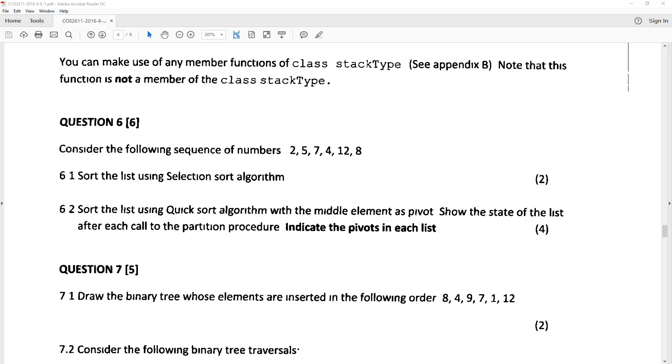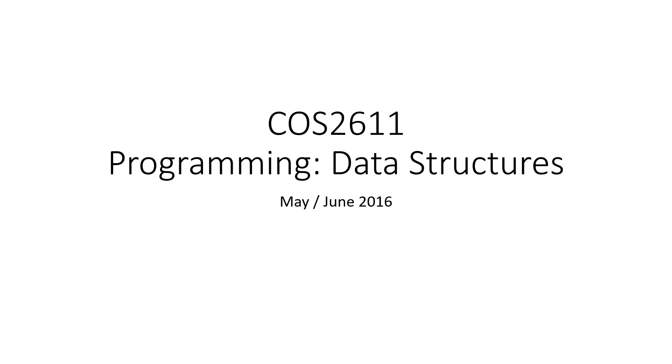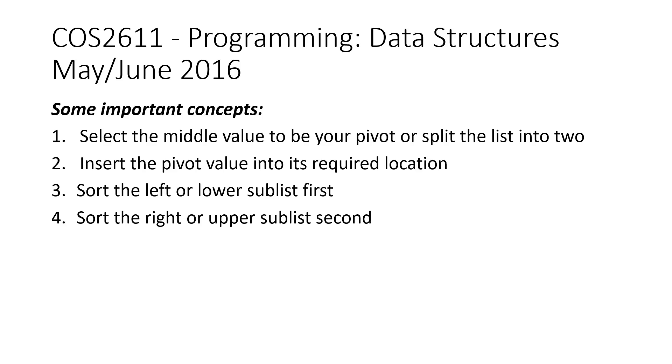So what I've done is I've copied the list according to what they've got. These are some important concepts: Select the middle value to be your pivot or split the list into two. Insert the pivot value into its required location. Then sort the left or lower sublist first. Sort the right or upper sublist second. This is as per tutorial 202 of 2016.